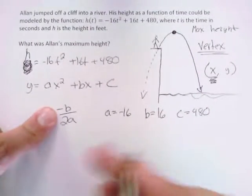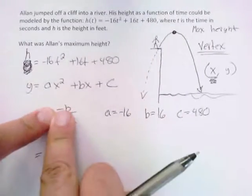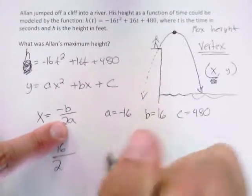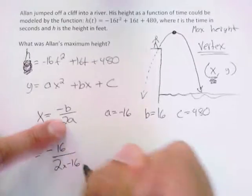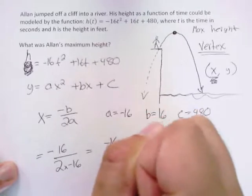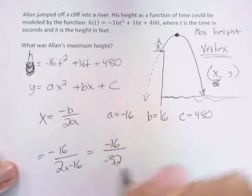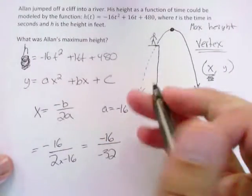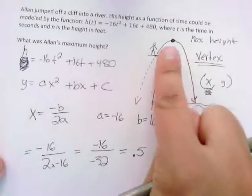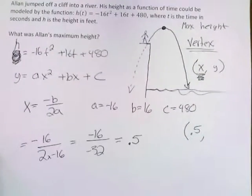So this gives us the x value of the vertex. Start with a negative, negative 16. So I have negative b is 16, divided by 2 times a, which is 2 times -16. So simplifying this, we get -16 divided by 2 times -16 being -32. -16 divided by -32 is 0.5 or 1/2. So when I'm trying to figure out my vertex, I know the first part of that is 0.5.